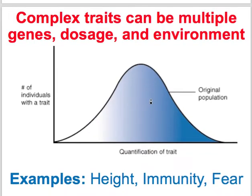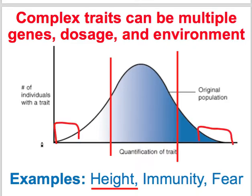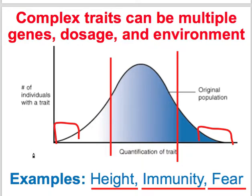This is where we get into complex traits — things that are distinct, not just an on or off. A good example is height: most human individuals are going to be between 5'5 and 5'11, with people that are very tall on one end and very short on the other. The same thing happens with your immune system strength — some people have hyperactive immune systems, some are immunocompromised. Another good trait is fear or startle response, and this is actually where a lot of epigenetics are studied.